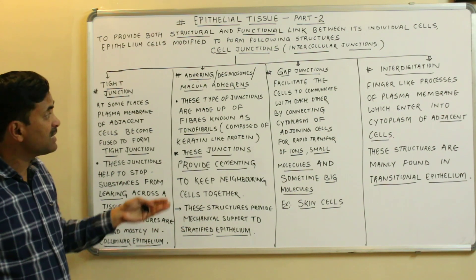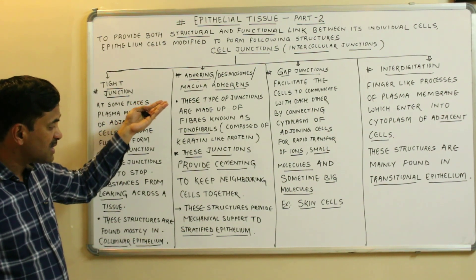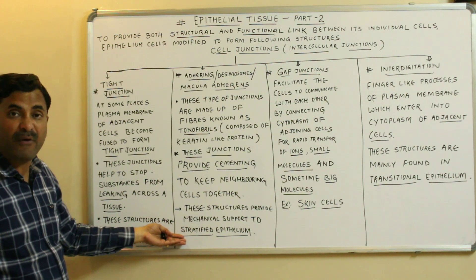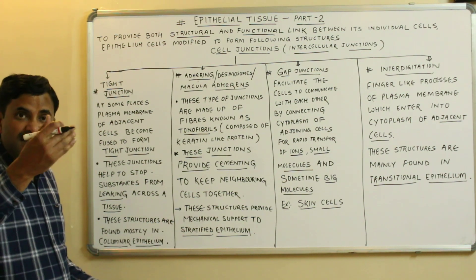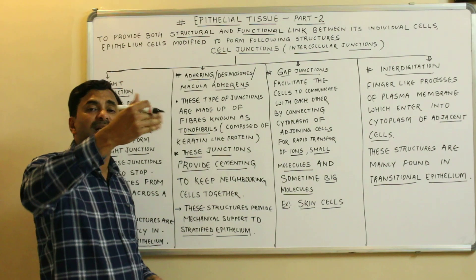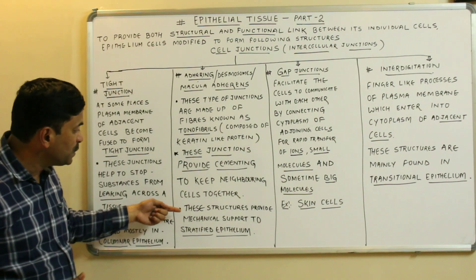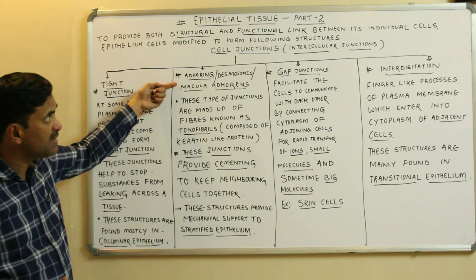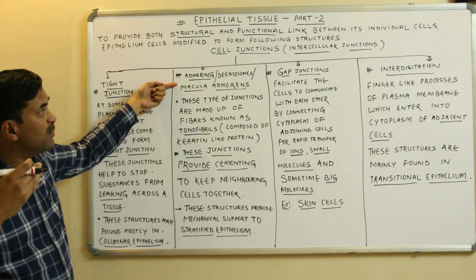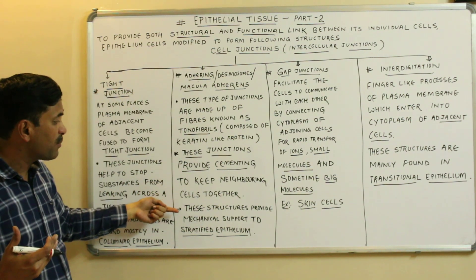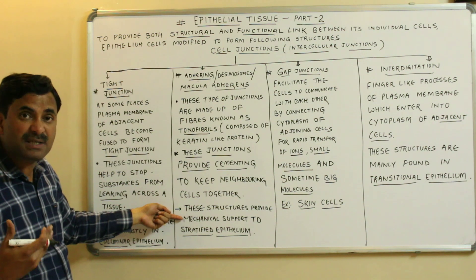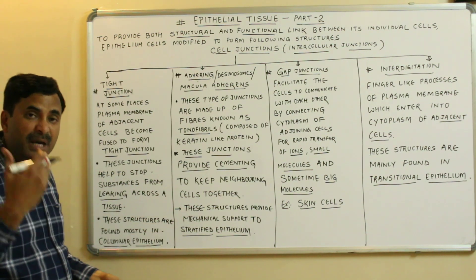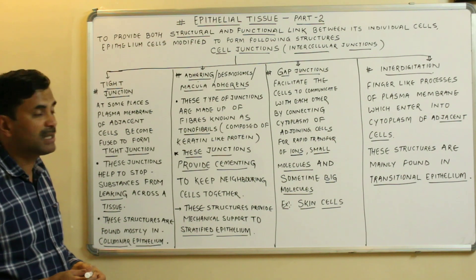Adhering junctions are found in stratified epithelium — epithelium in which the cells are arranged in layers. These adhering junctions provide mechanical support to the stratified epithelium.